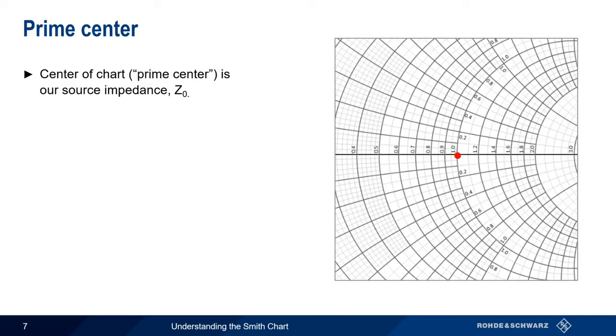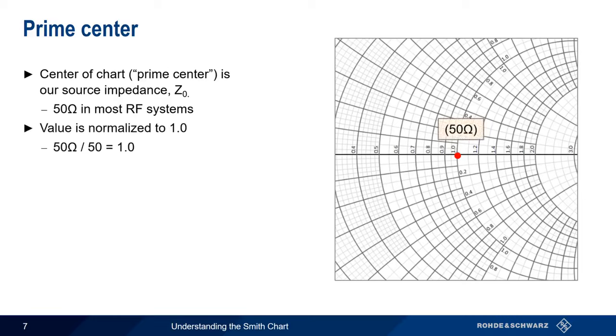In most RF systems, our source impedance is a purely resistive 50 ohm load. When using the Smith Chart, we normalize the source impedance to 1, in this case by dividing by 50, so the center of our Smith Chart, 1.0, corresponds to our purely resistive 50 ohm load.